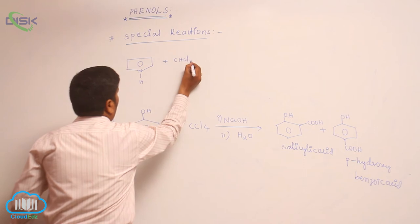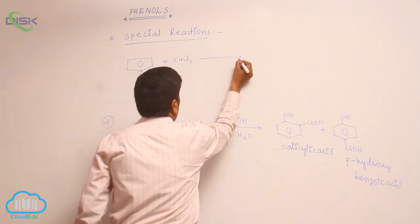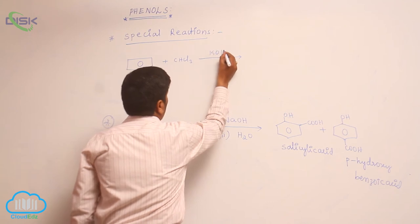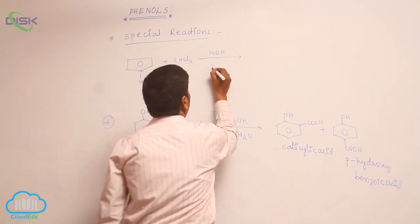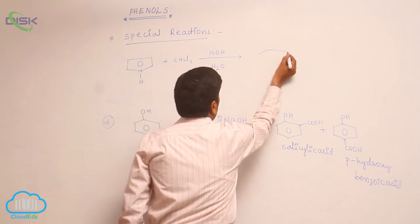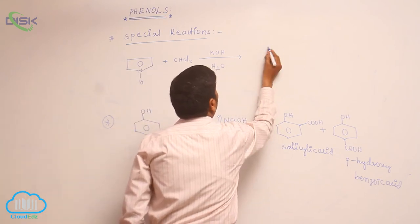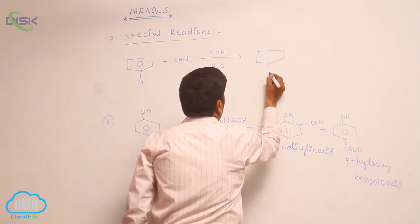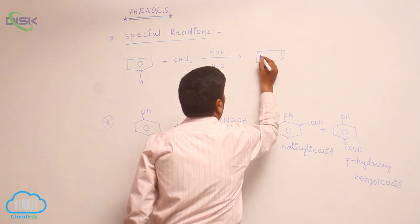Pyrrole reacts with chloroform in presence of potassium hydroxide followed by H2O. It forms pyrrole formaldehyde or pyrrole aldehyde.